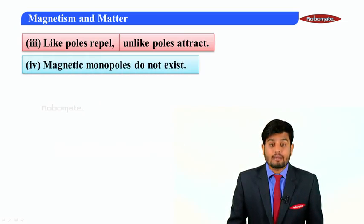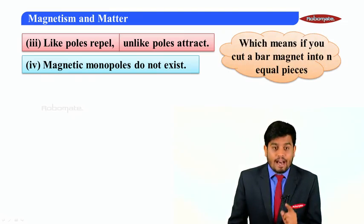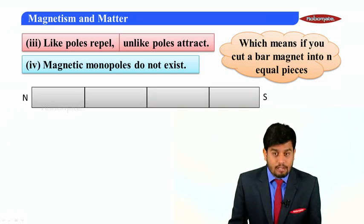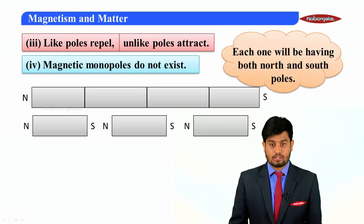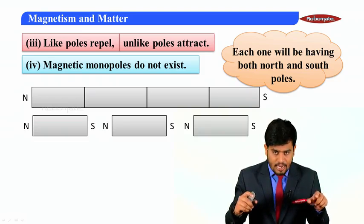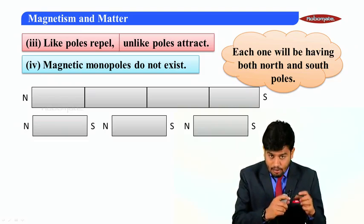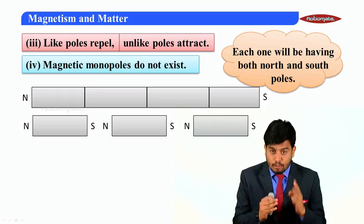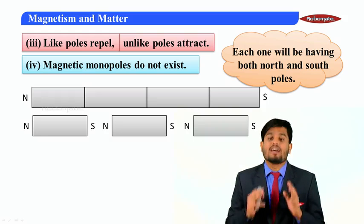The next point is, magnetic monopoles do not exist. If you cut a bar magnet into n equal pieces, each one will be having both south and north poles. Each slice you have obtained will always be facilitated with two poles: north pole, south pole. Therefore, we can say that magnetic monopoles do not exist.